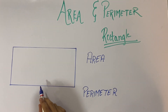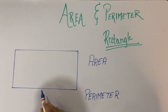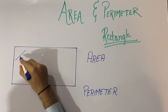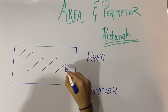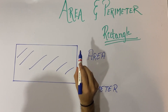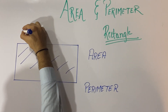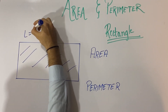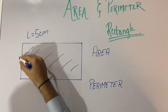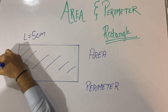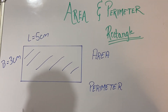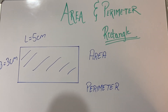Now this is a rectangle. We will find the area and perimeter of the rectangle. Again, area is the inner portion and perimeter is the sum of all the sides. The length is always the greater side, so let's assume length as 5 centimeter. Breadth is always the shorter side, so let's assume breadth as 3 centimeter. Breadth is also called width.